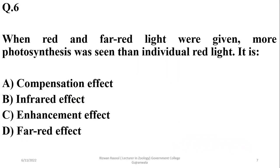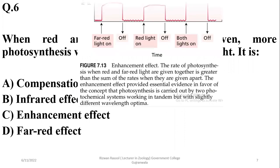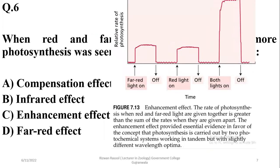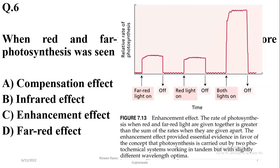Question six: When red and far-red light are given together, more photosynthesis is seen than with individual red light. This is known as the enhancement effect. Far-red plus red light can give maximum rate of photosynthesis rather than just red or far-red light individually, as shown in the graph.